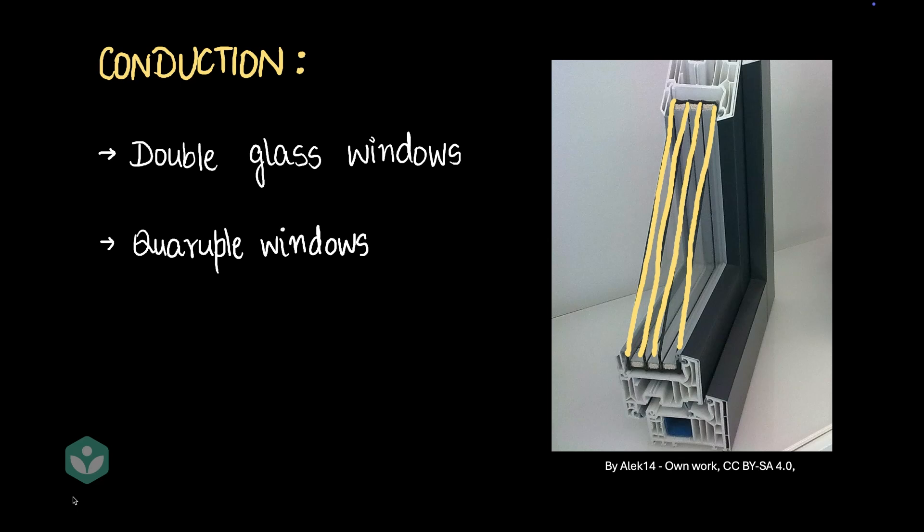Okay, now we've dealt with conduction. Let's move on to convection. Let's say it's a pretty cold climate, and let's say you want to keep the heat inside the house. One of the simplest ways is to seal all the gaps.